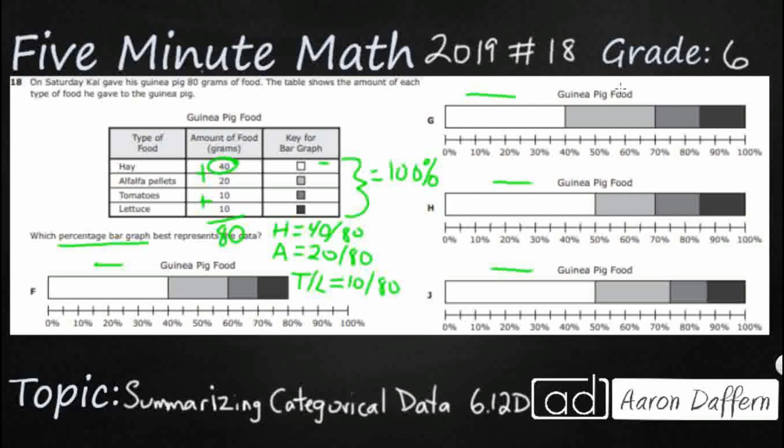So we need to reduce each of these but you probably can take a look at this right here, 40 over 80, you can just take the zeros off and you get 4/8 which is the same as 1/2.